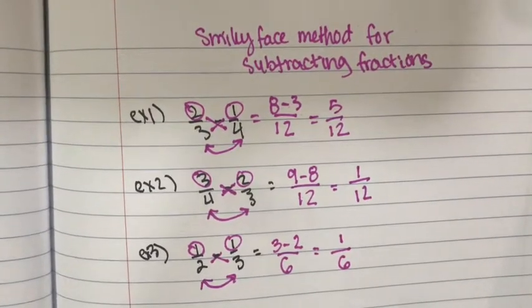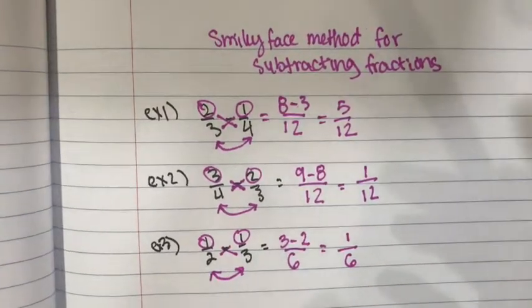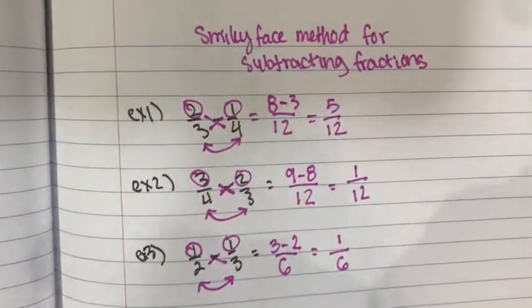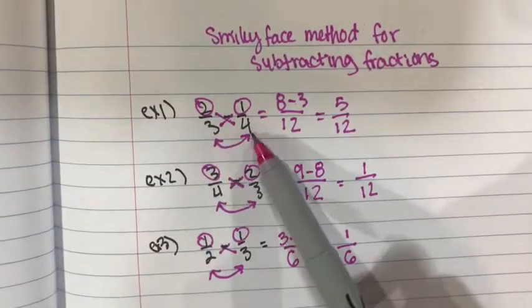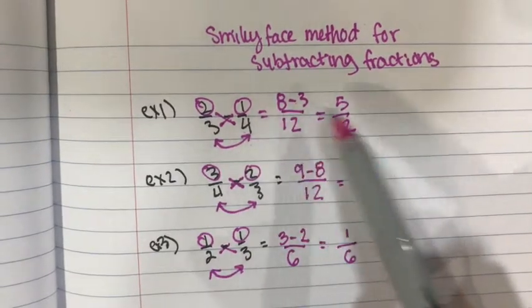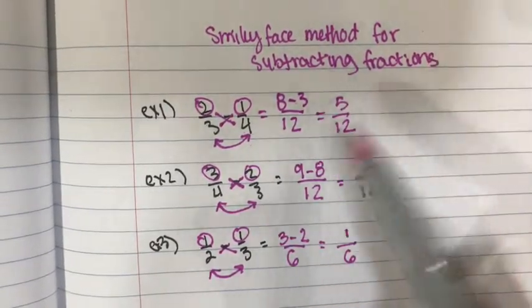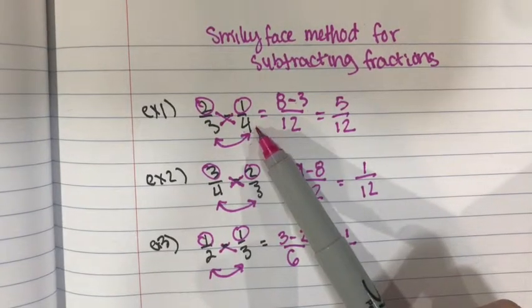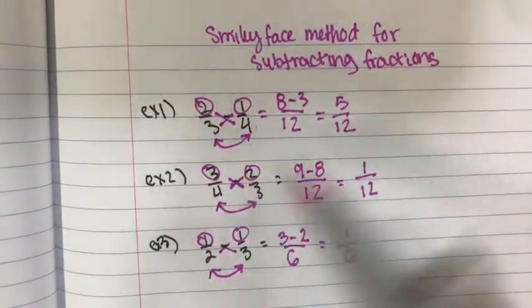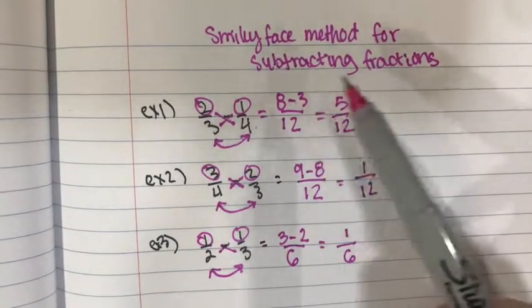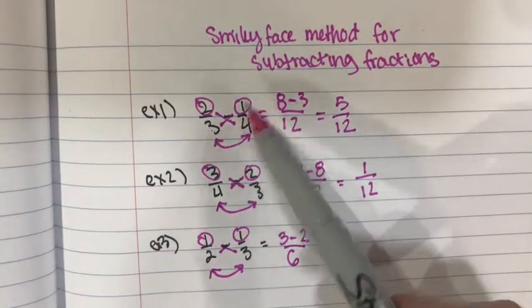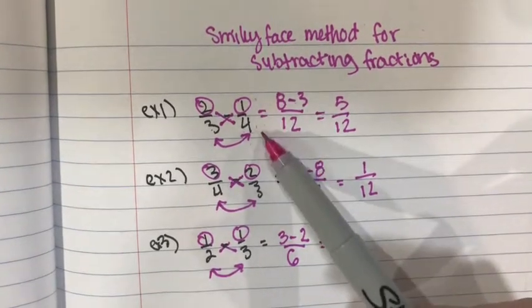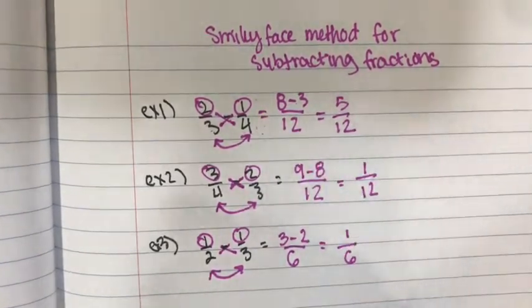It's very similar to the bowtie method. The only difference is that in the smiley face method, you multiply your denominators first, and in the bowtie method, you do that step last. This is different from the traditional method, where you multiply each fraction to get a common denominator and write it out. So that's the smiley face method for subtracting fractions.